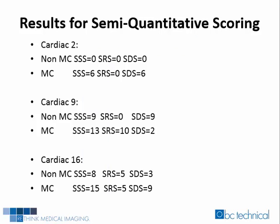In summary: Cardiac II had all zeros for the non-motion corrected, but motion correction showed a summed stress score of 6 and a summed difference score of 6. Cardiac IX non-motion corrected had a summed stress score of 7 and summed difference score of 7; after motion correction, the summed stress score was 13, summed rest score was 10, and summed difference score was 2. Cardiac XVI non-motion corrected had a summed stress score of 8, summed rest score of 5, and summed difference score of 3; after motion correction, the summed stress score increased by 7, the summed rest score stayed the same, and the summed difference score was 6.